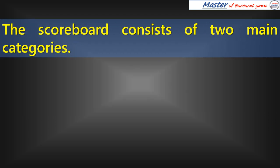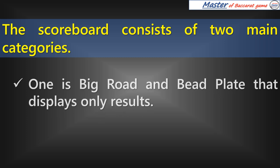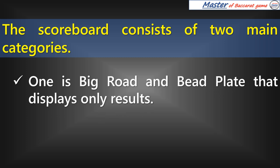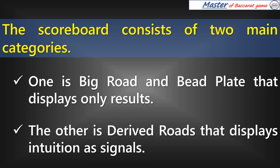The scoreboard consists of two main categories. One is Big Road and Bead Plate that displays only results. The other is Derived Roads that displays intuition as signals.